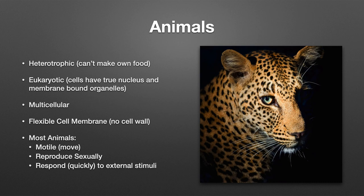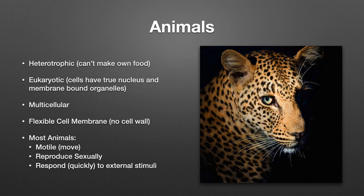Most animals are also motile, reproduce sexually, and will respond to a stimulus. The reason I say most is because there are some weird things like sponges that don't really move per se; however, they do have cells that move inside of them. Many animals we wouldn't think of as moving also have movement at some point during their life cycle. Sexual reproduction is a big animal thing, but some animals also reproduce asexually. If you poke a cheetah, you're probably going to lose an arm — so animals respond to external stimuli.